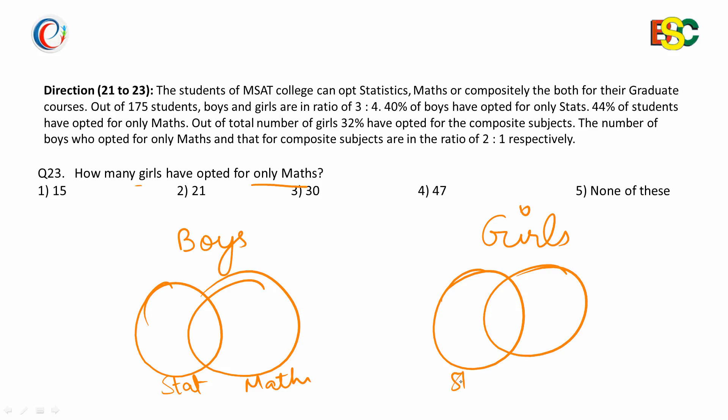Earlier we calculated that boys who opted for only Stats were 30, for both subjects were 15, and 30 for only Mathematics. In the case of girls, 21 have opted for only Stats.